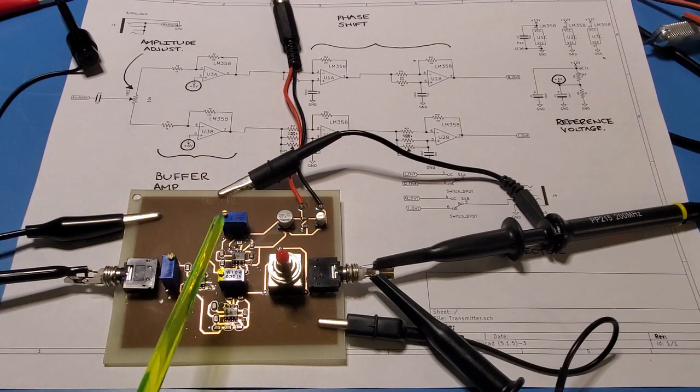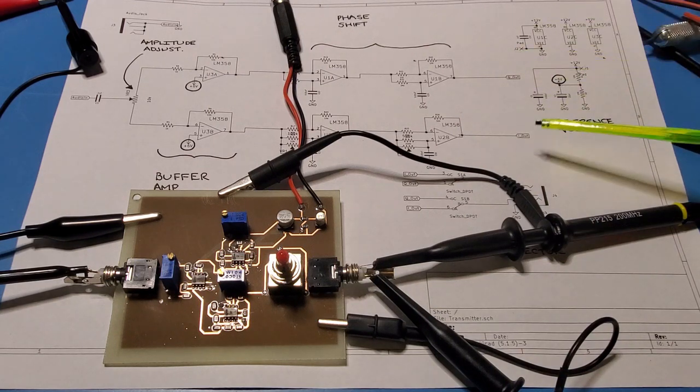Here's the finished audio phase shift board, built up and ready to test. Here's the input signal, the amplitude adjust pot, the buffer amplifier, the phase shift network with two adjustment pots for phase adjustment, the power supply circuitry, and the double pole double throw switch that allows me to adjust which is the I and which is the Q signal.